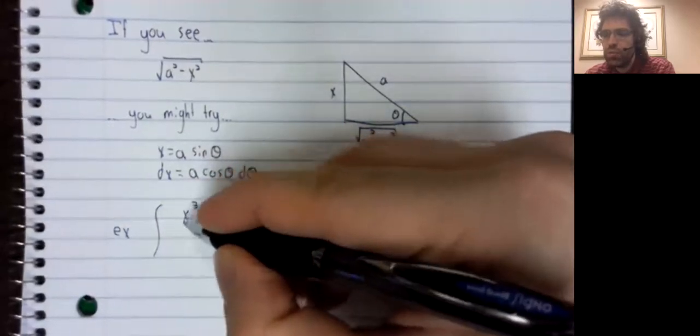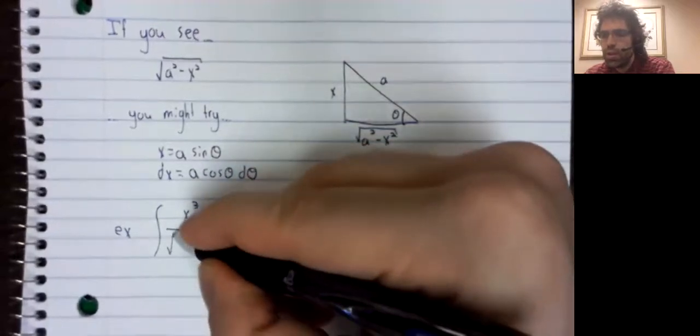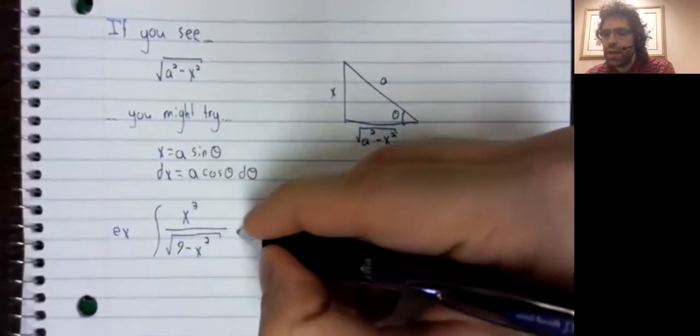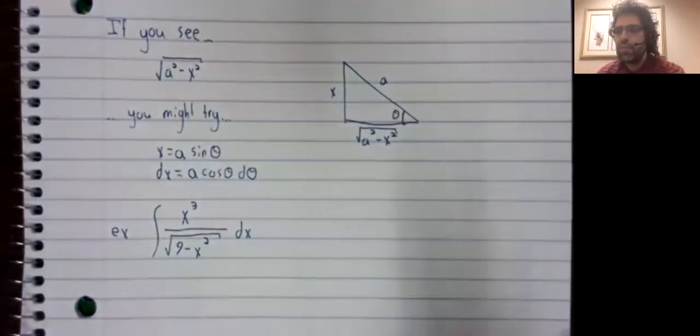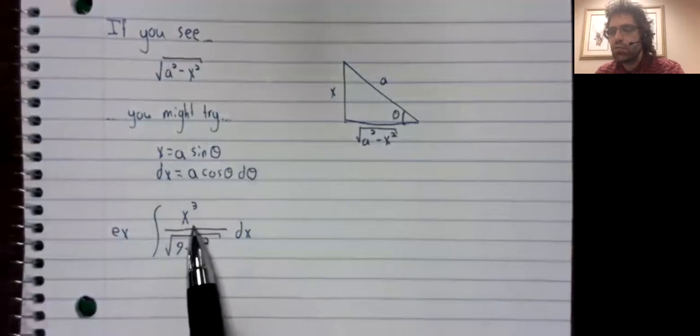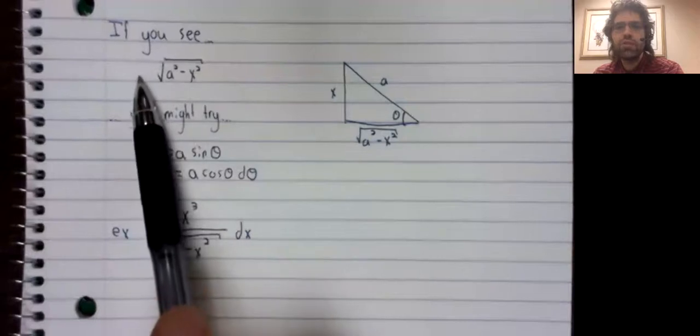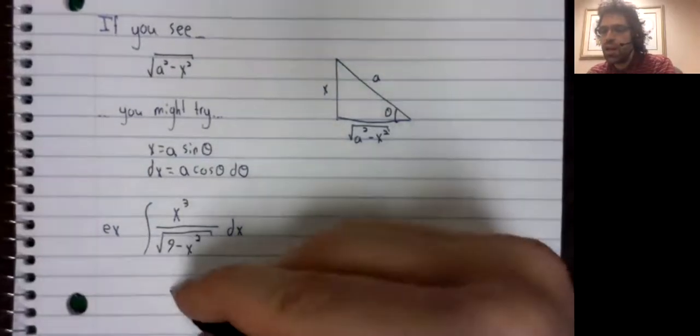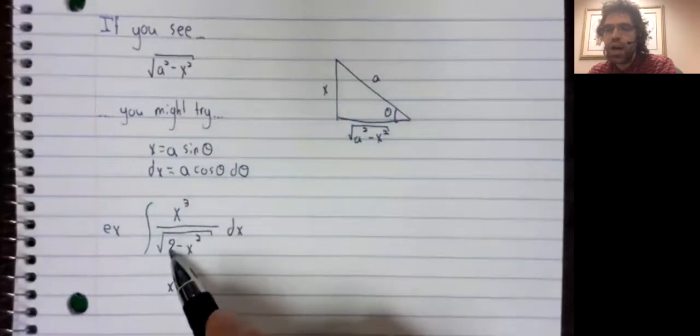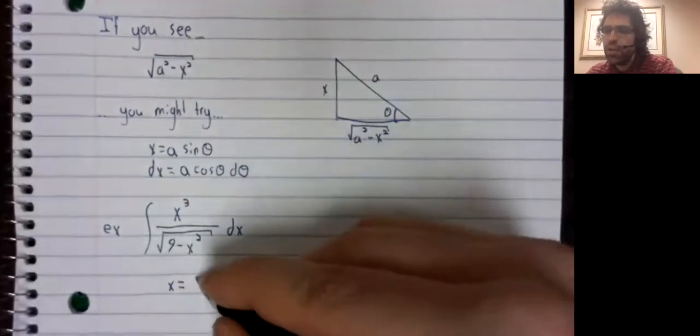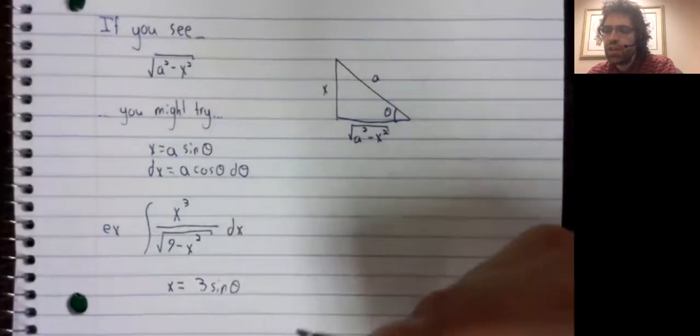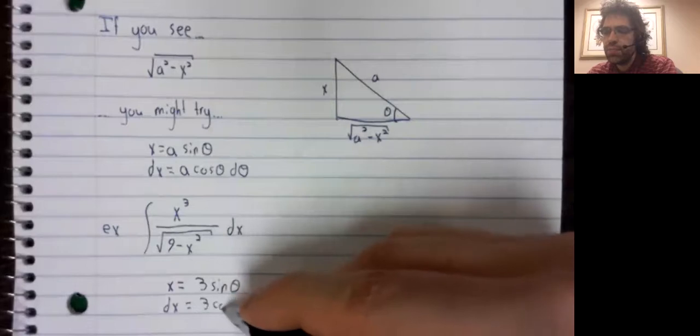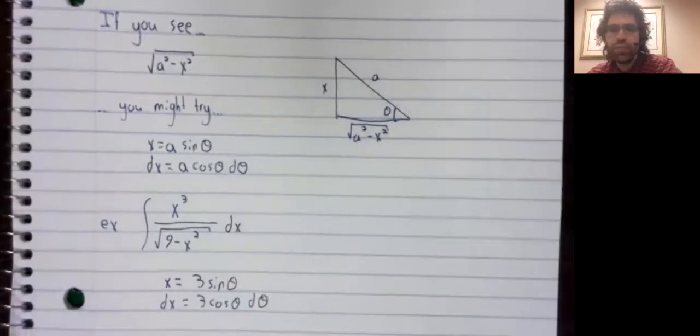For example, suppose we have the integral of x cubed over the square root of nine minus x squared dx. We see this square root, and this square root does have this form. So the suggestion is that we might try letting x equal nine is three squared, so three times the sine of theta, and then dx we would let be three times the cosine of theta d theta.